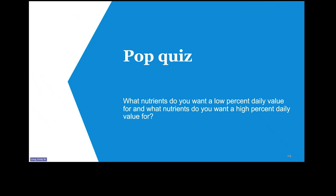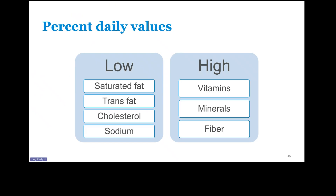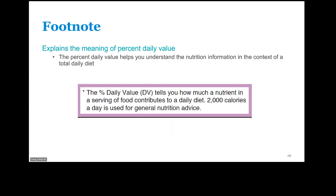One more pop quiz: what nutrients do you want a low percent daily value for, and what nutrients do you want a high percent daily value for? You want low values for saturated fat, trans fat, cholesterol, and sodium, and high values for vitamins, minerals, and fiber. You'll also notice there's a footnote at the bottom of the nutrition label that explains the meaning of percent daily value to help you understand the context of a total daily diet.